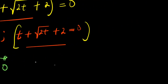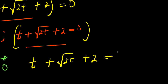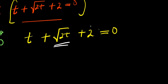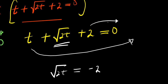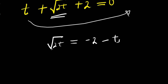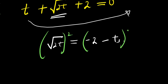The next step is to solve the second equation: t plus square root of two t plus two equals zero. We isolate the square root of two t term by moving the others over, giving square root of two t equals negative two minus t. To eliminate the square root, we square both sides of the equation.